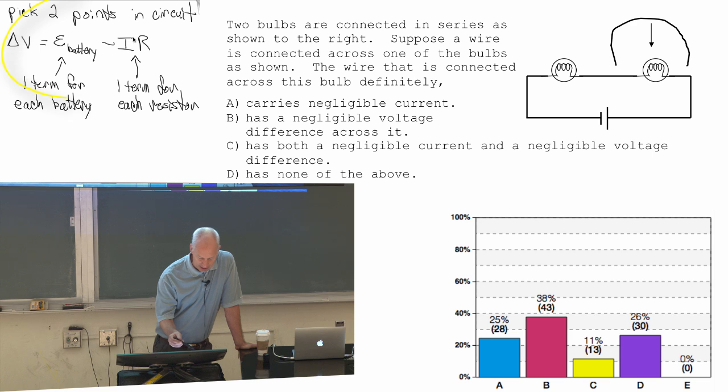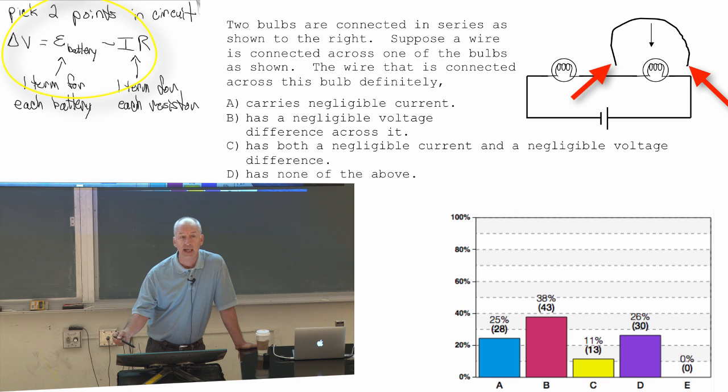So if something doesn't have any resistance, if R is zero, so between this point here and that point there after it's connected,